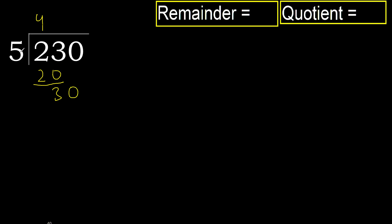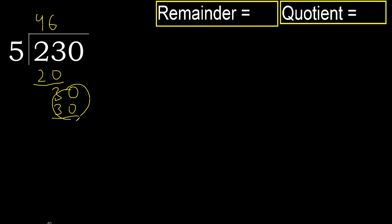5 multiplied by 7 is 35 — 35 is greater, so multiply by 6. 5 times 6 is 30. 30 is not greater, so subtract. 30 minus 30 equals 0.